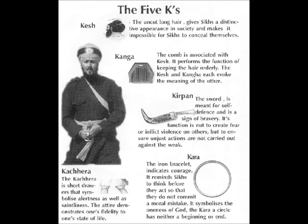The five Ks are not just symbols, but articles of faith that collectively form the external identity and the Khalsa devotee's commitment to the Sikh Rheni, the Sikh way of life. A Sikh who has taken Amrit and dons all five Ks is known as Khalsa, meaning pure, or Amritdhari. While a Sikh who has not taken Amrit but follows all rules and keeps all five Ks is called a Sahajdhari, or slow adopter.